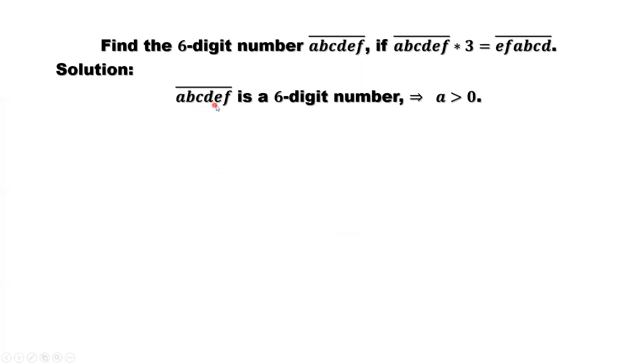Because abcdef is a six-digit number, we imply the leading digit a is bigger than zero. Otherwise, it is a five or less digit number. abcdef times three forms a new six-digit number. Because the original number is six-digit, the new number is also six-digit. From here, we also imply the leading digit e is also bigger than zero.